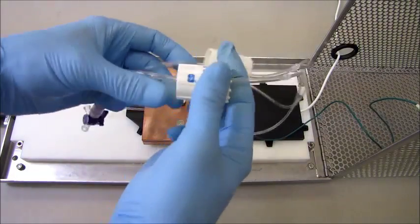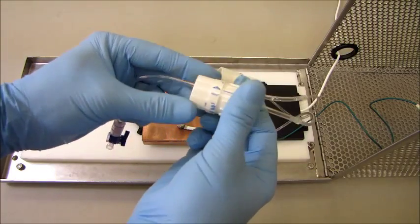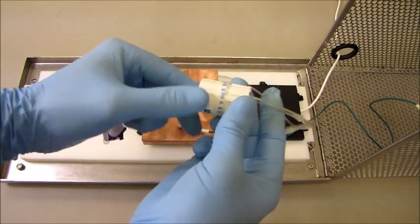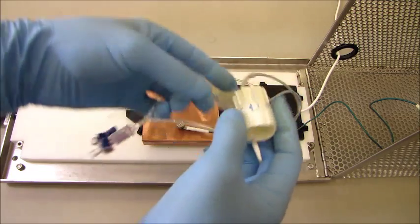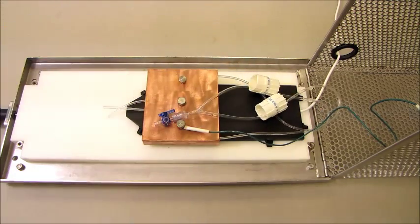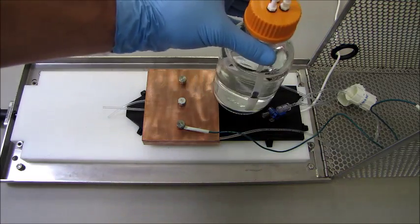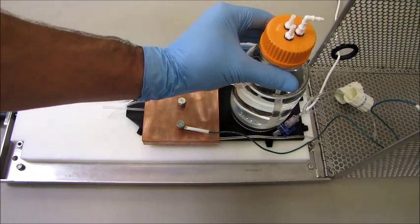The next step will be to prime the flow control assembly. Adjust the flow controller so they read open or prime, depending on which model you're using. Orient the flask so the elbow is pointing towards the hinge of the cage.